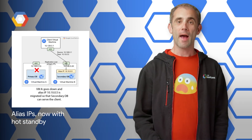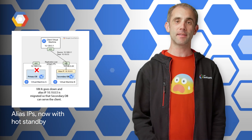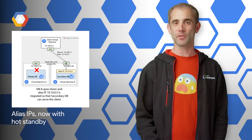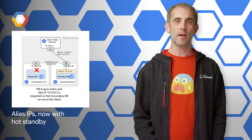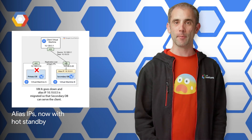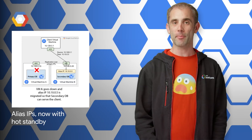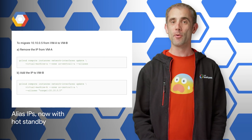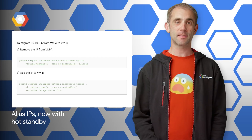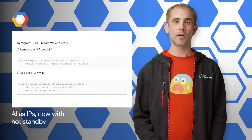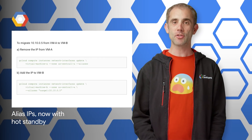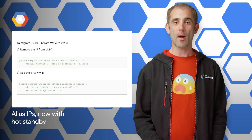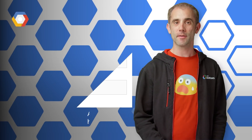On Google Cloud Platform, alias IPs allow you to configure secondary IPs or IP ranges on your virtual machine instances for a secure and highly scalable way to deliver traffic to your applications. You can now dynamically add and remove alias IP ranges for existing running VMs so that you can migrate your applications from one VM to another in the event of a software or machine failure. Graphs and example commands are on the post.